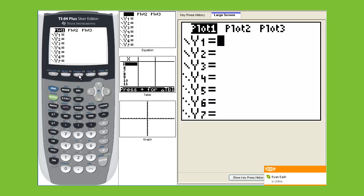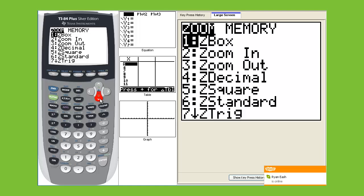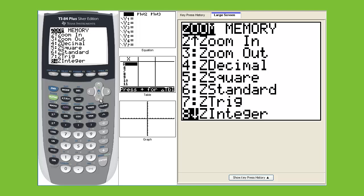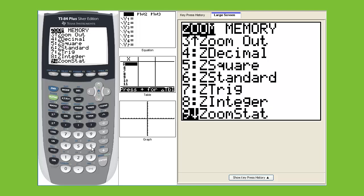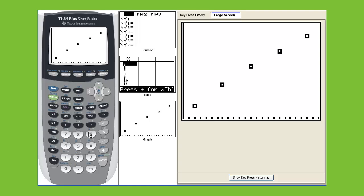Now what we can do is we can hit zoom. Then you can go down and zoom 9 is your zoom stat button. If you go to 9, zoom stat, hit 9, there is your scatter plot.